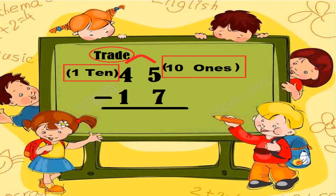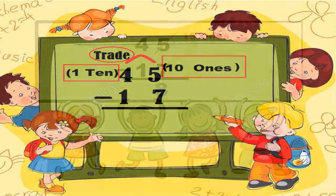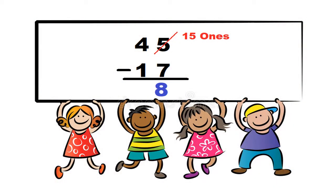To regroup, we need to trade one of these tens blocks for 10 ones. Now we have 15 ones blocks instead of 5 ones blocks. Now we can easily take away 7.